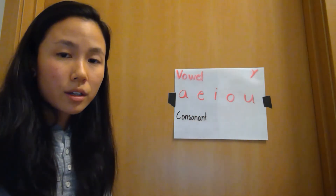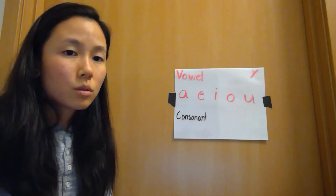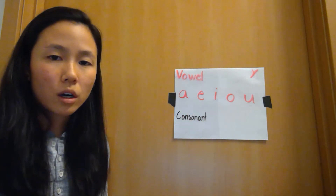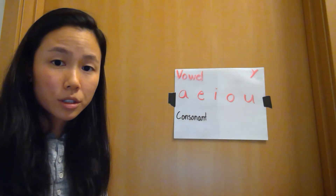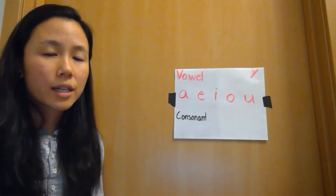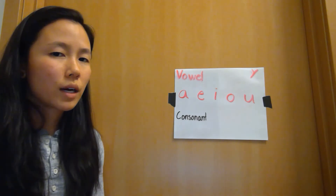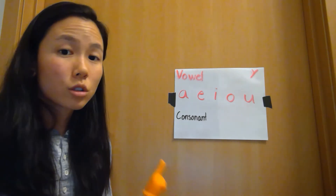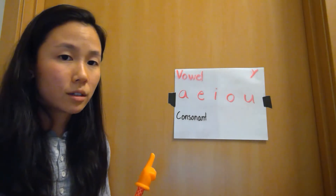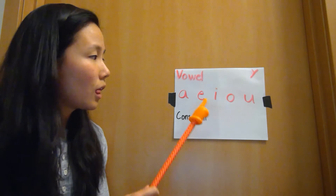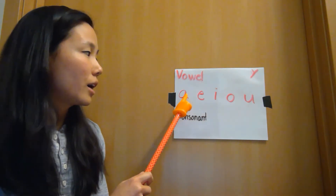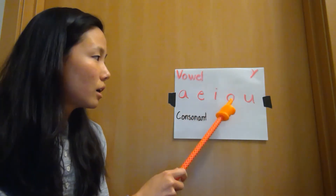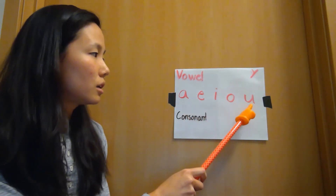Now that we said the names, we can say the sounds. These are also called the short vowel sounds, because vowels can make two different sounds. The short sounds are: A, E, I, O, U.